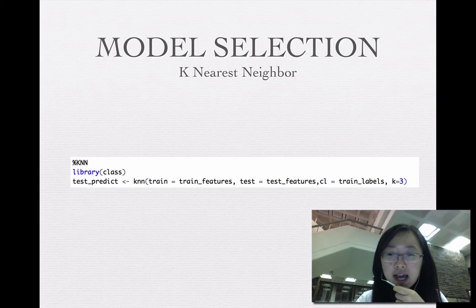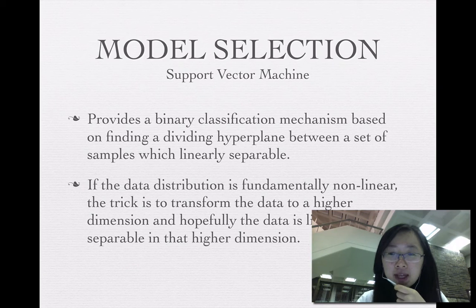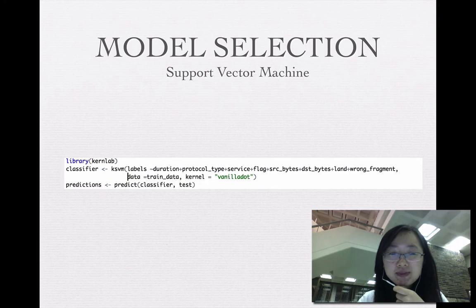For the support vector machine model, it provides a binary classification mechanism based on finding a dividing hyperplane between a set of samples which are linearly separable. If the data distribution is fundamentally nonlinear, the trick is to transform the data to a higher dimension and hopefully the data is linearly separable in that higher dimension. This picture shows how the support vector machine works. This is the code I used to do experiments.